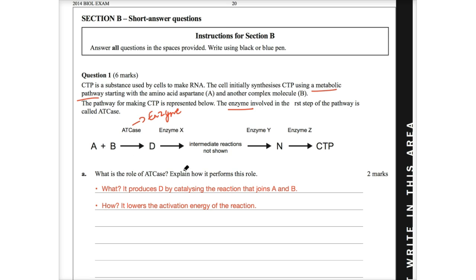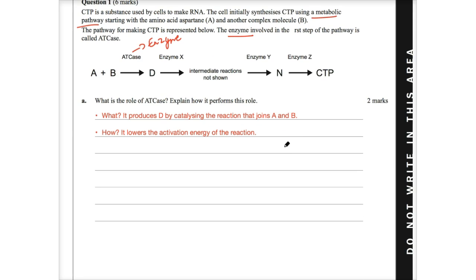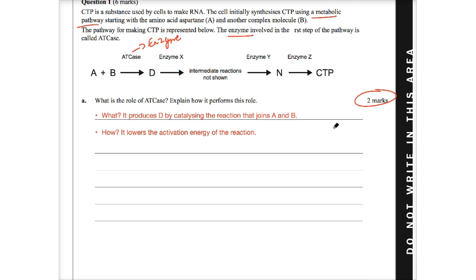So looking at question A, what is the role of ATCase? Explain how it performs this role. Now, I think when students see this and we just have a look at the number of lines that are given, there's about seven lines given. And so students will see that and think, okay, I've got to provide so much detail, but it's only two marks. And two marks mean essentially two key points. If it's a comparison question, it's a comparative statement. So essentially, we just break this up into the two sections. It's looking for what role ATCase plays and how it performs that role.